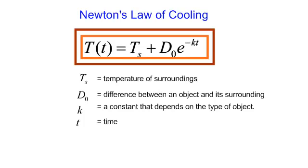We are going to do a problem using Newton's law of cooling. We have T of t is equal to T_s plus D_0 e to the negative kt. That's the formula they gave us. Let's see what these things stand for.